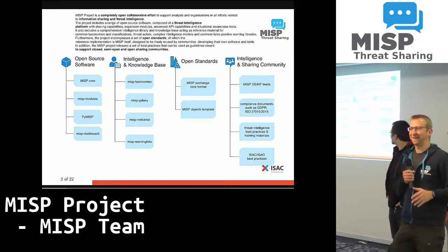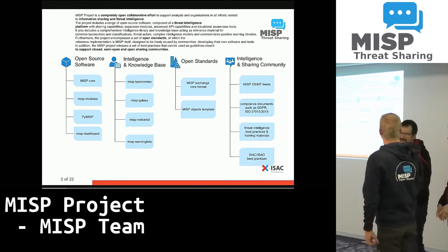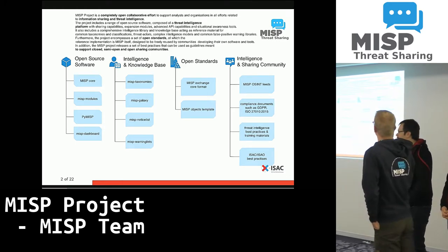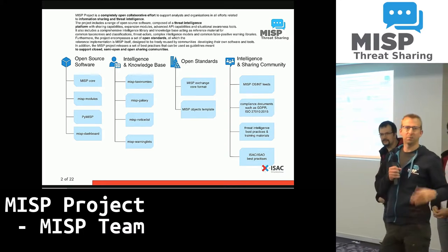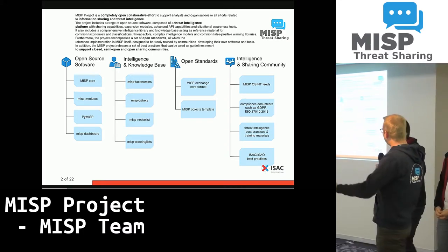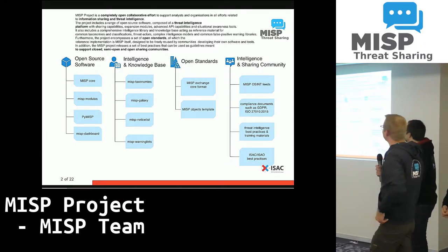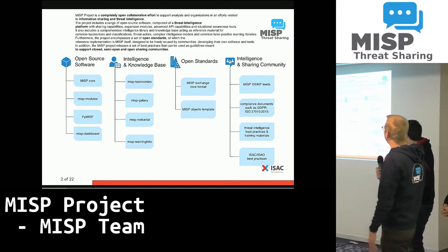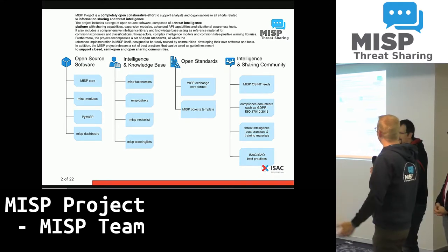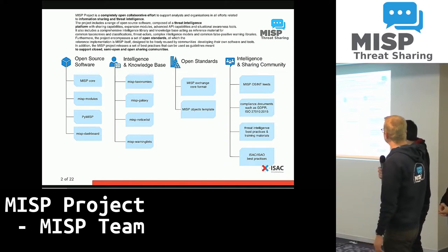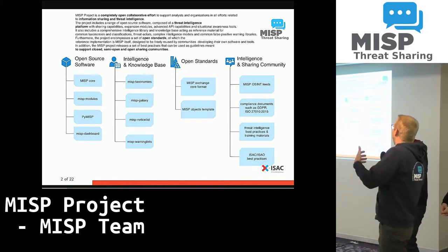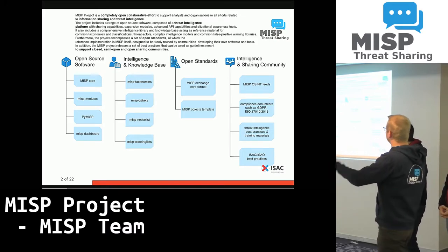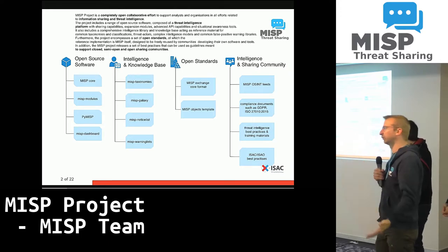MISP has grown a lot. If you look at the initial project we worked on with Christoph some years ago, it was basically just a small software. Nowadays it's a complete project with multiple parts. We separate the MISP project into four kinds of pillars. Obviously one is the open source software — that's the most important part. It's a threat intelligence platform with additional software, including dashboards, expansion modules, libraries, and tons of other software.